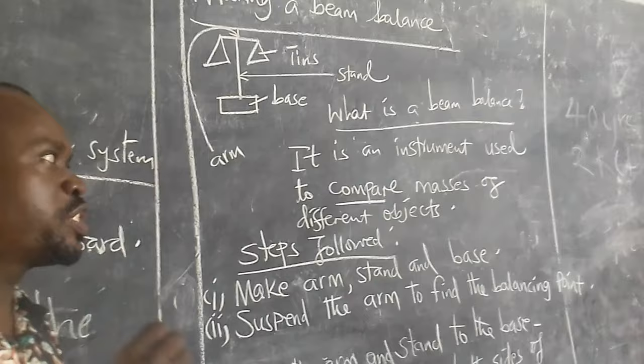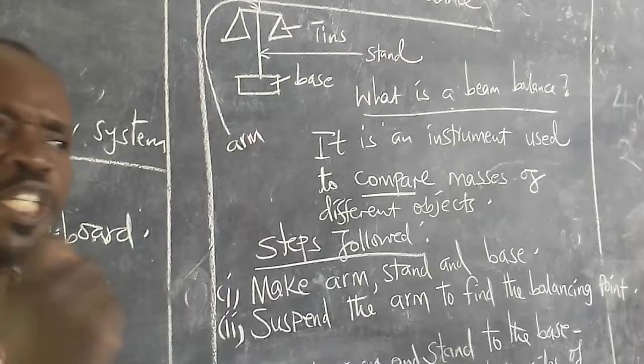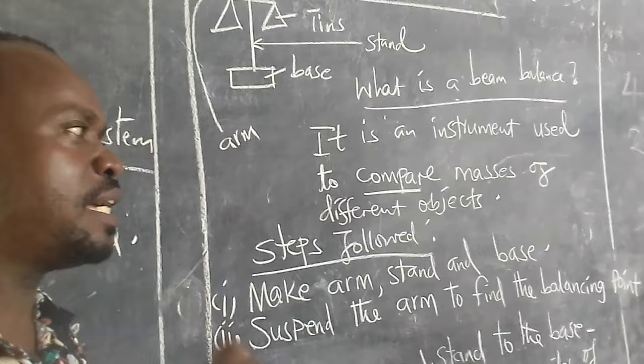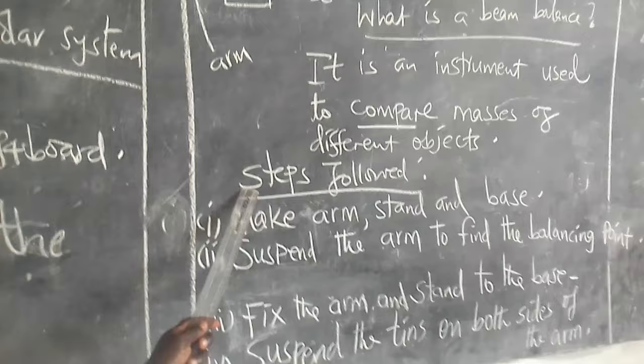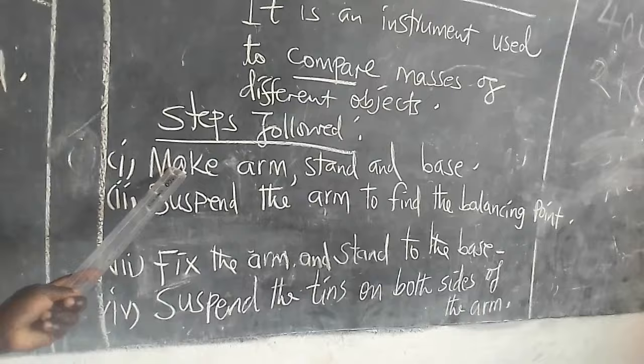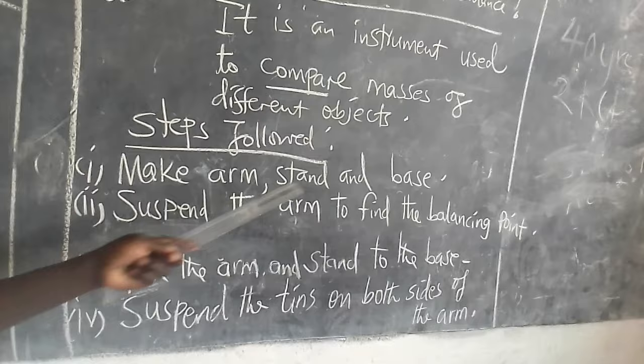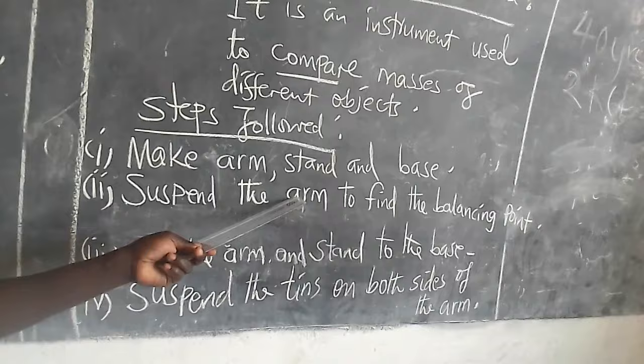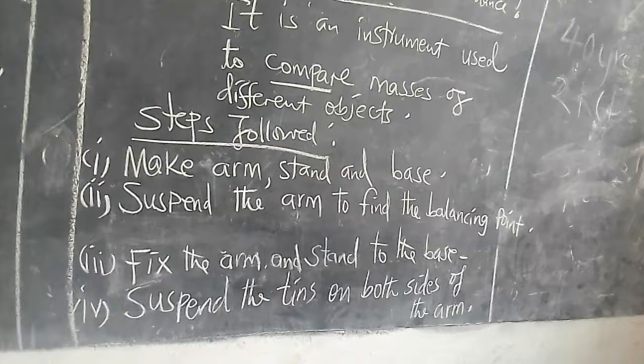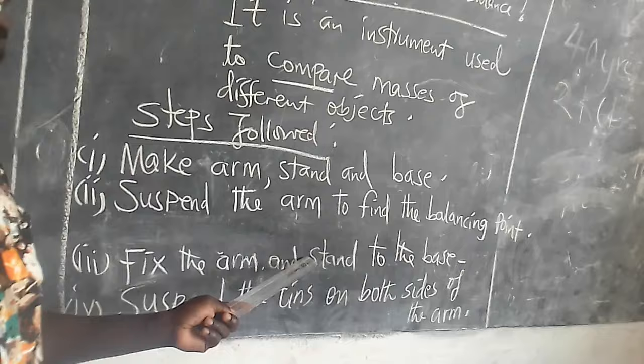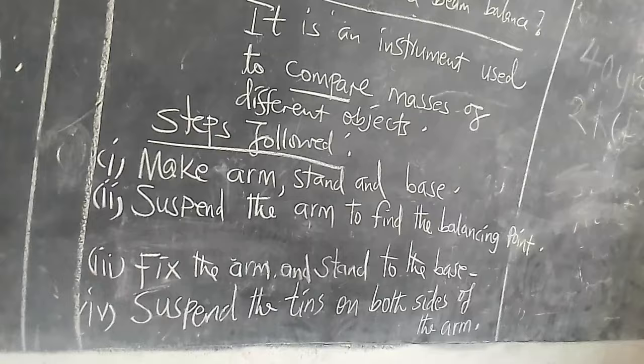What is mass? Mass is the quantity or the amount of matter in a substance. Steps followed when constructing a beam balance: one, make arm stand at the base; two, suspend the arm to find the balancing point; three, fix the arm and stand to the base; four, and the last one, suspend the tins on both sides of the arm.